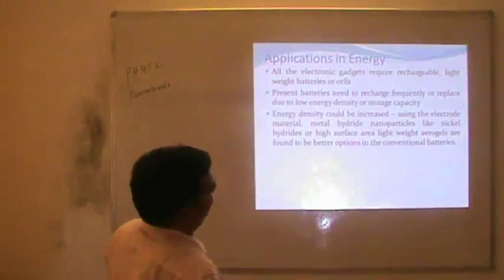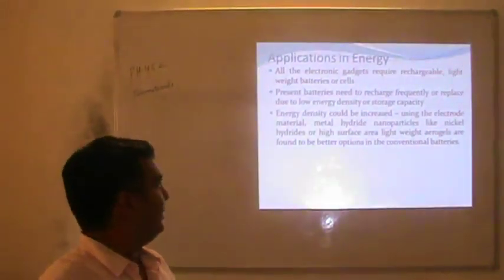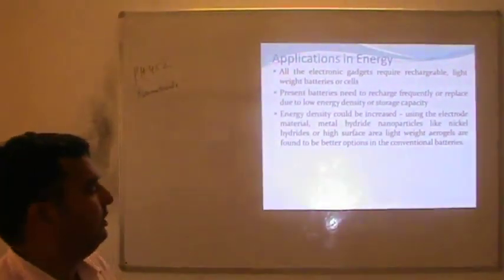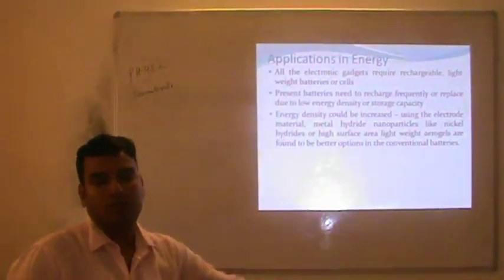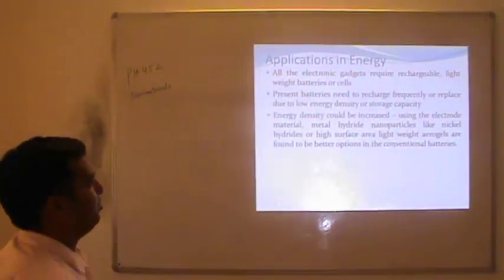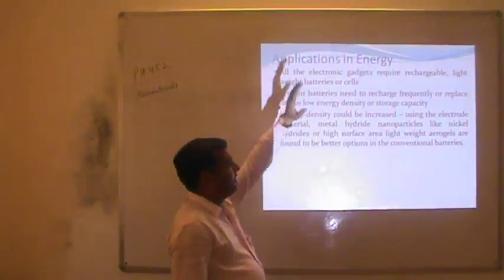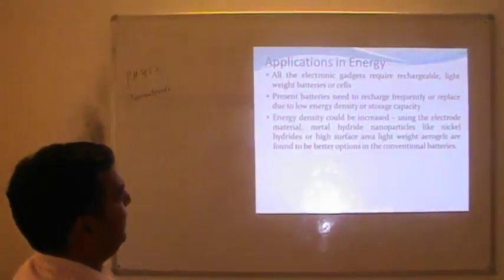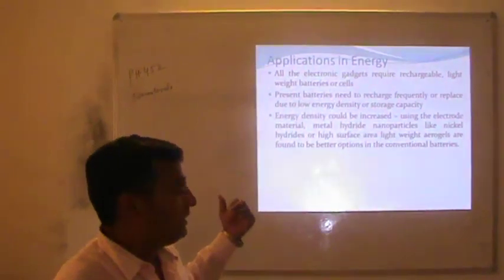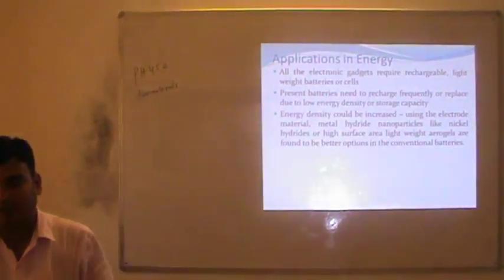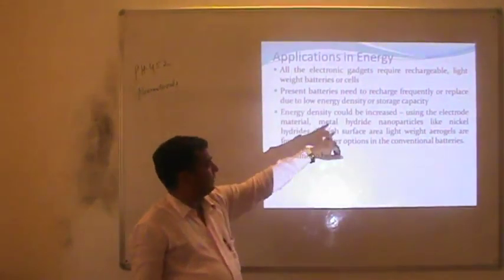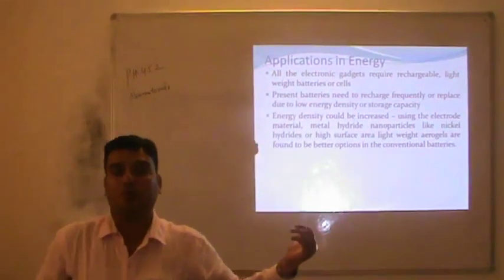All electronic devices require rechargeable, lightweight batteries or cells. By using nanomaterials such as carbon nanotubes in cells or batteries, it is possible to increase the efficiency and create longer-lasting batteries for every electronic device like computers, mobiles, and smartphones. Present batteries need frequent recharging due to low energy density or storage capacity. By application of carbon nanotubes, it is possible to increase efficiency and storage capacity. Energy density could be increased using metal hydride nanoparticles like nickel hydride, or high surface area lightweight aerogel cells to replace conventional lithium-ion batteries.